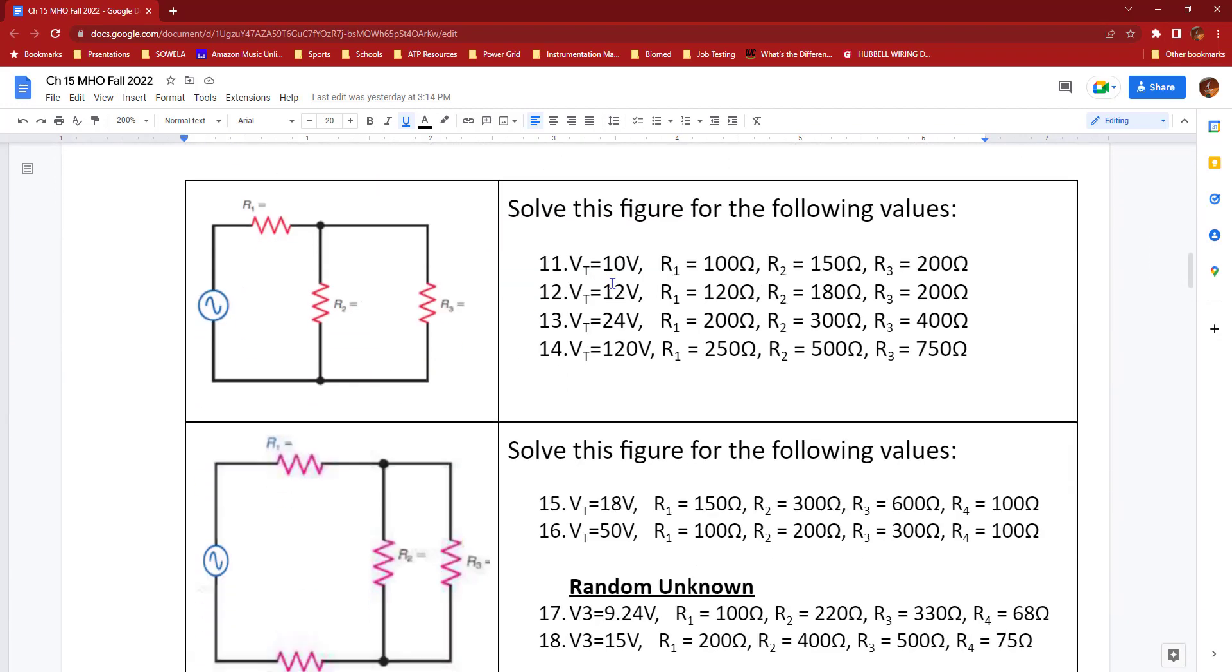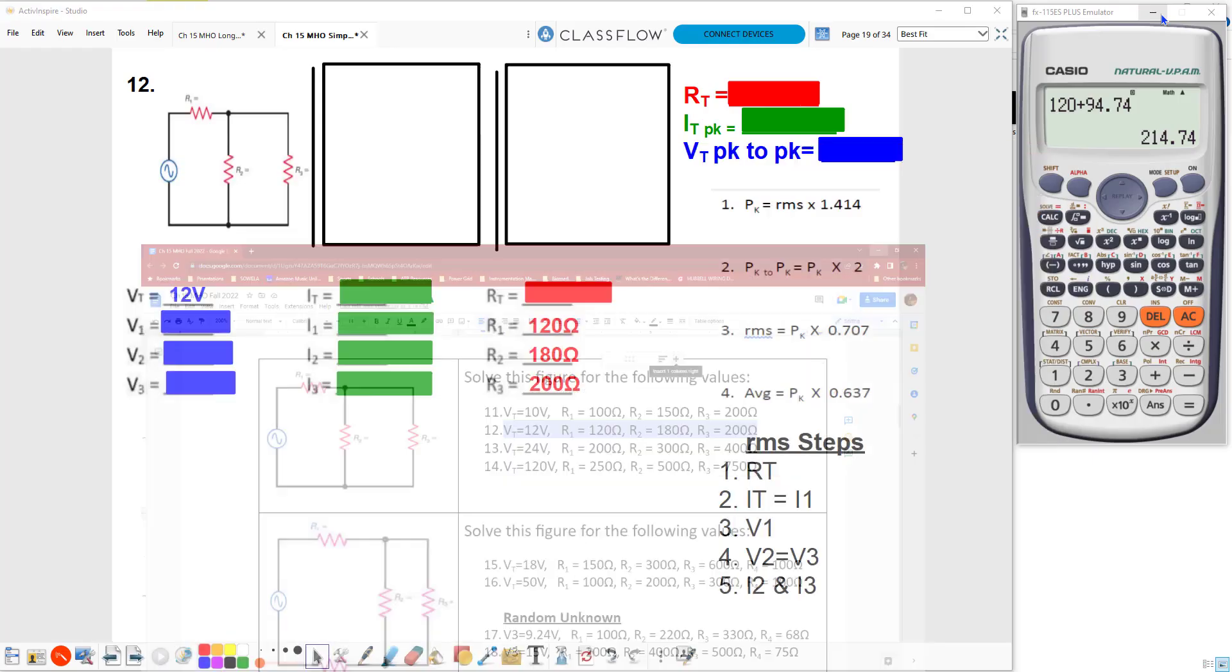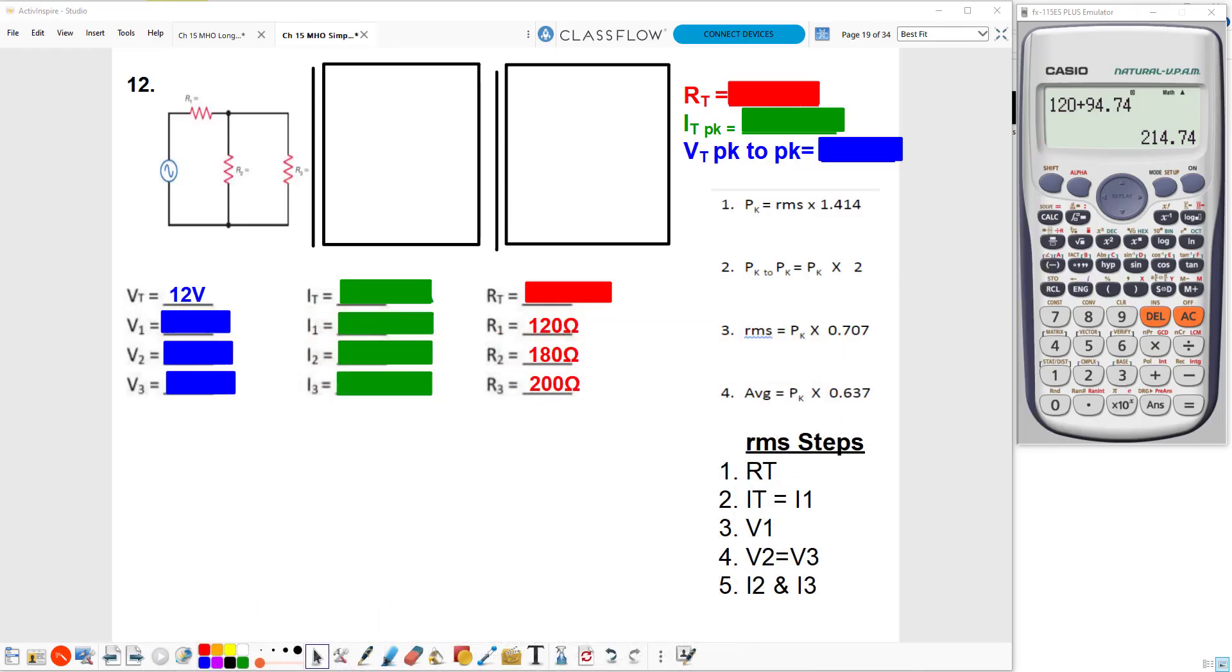We'll scroll down to number 12 and we'll see our values here on the Chapter 15 math handout. So I have 12 volts VT, an R1 of 120 ohms, R2 of 180 ohms, and R3 of 200 ohms.